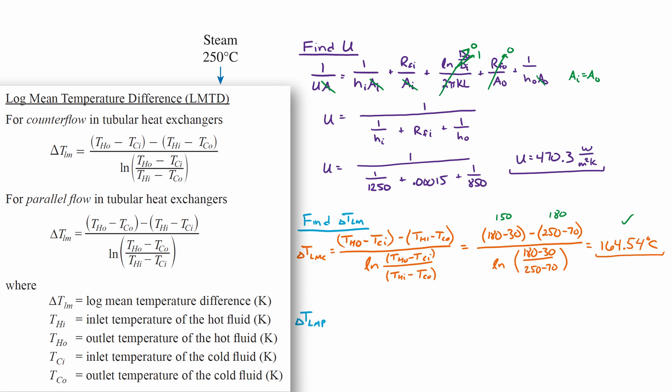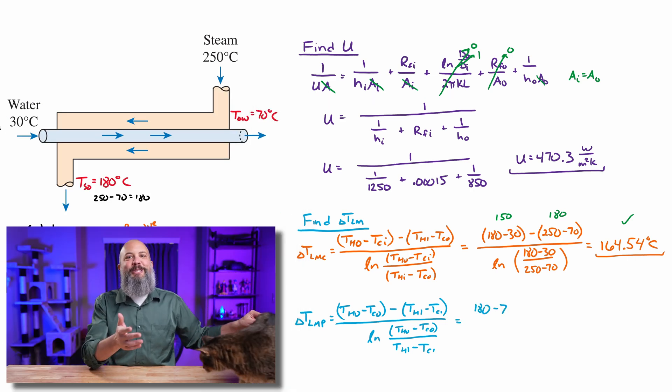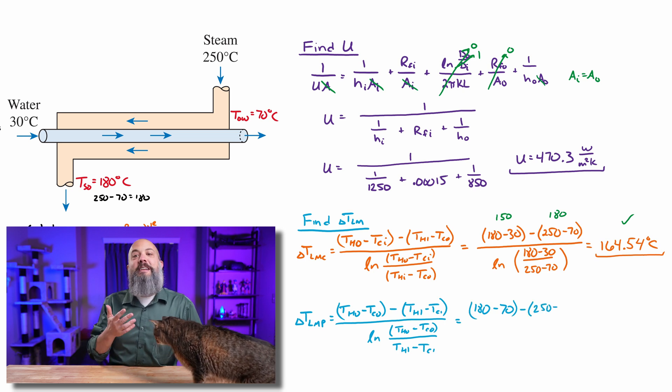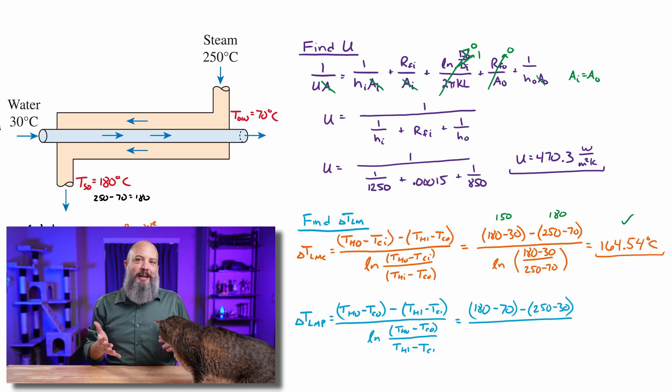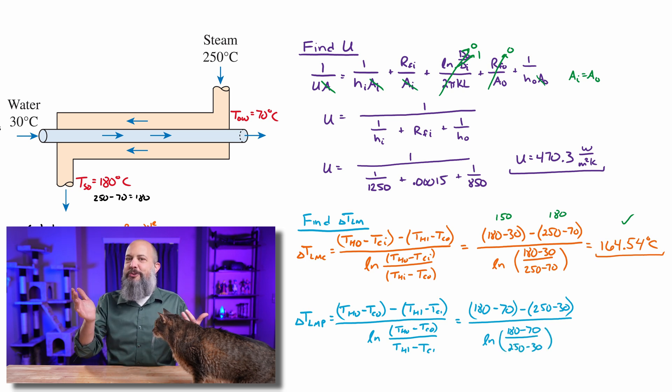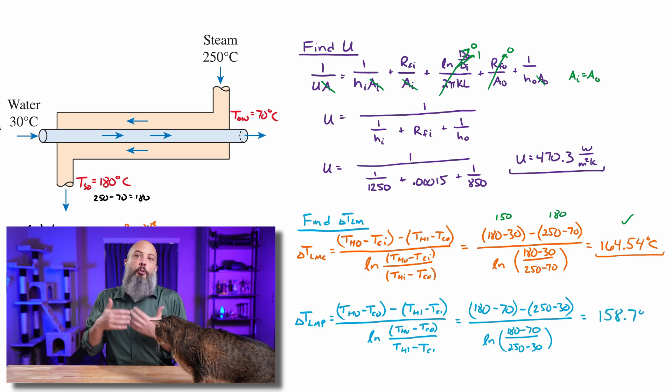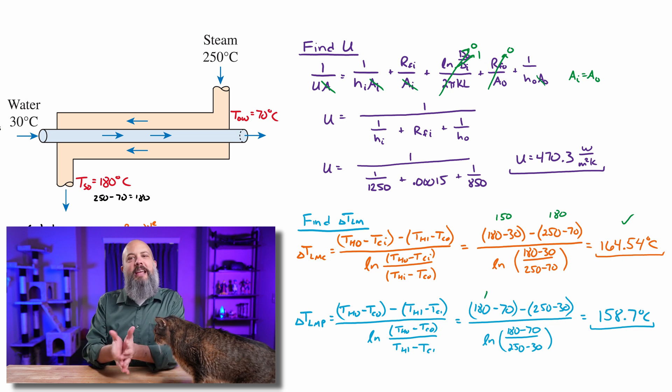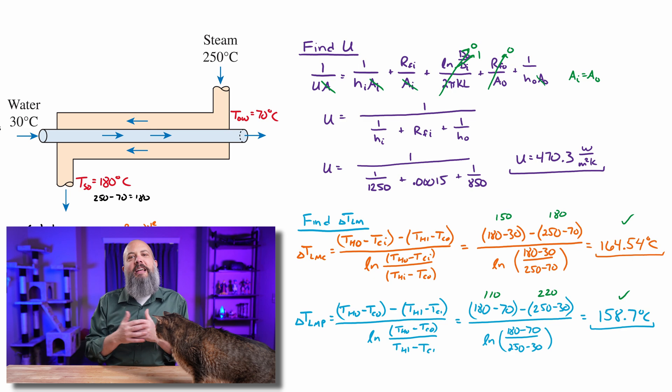Now, if this heat exchanger were actually parallel flow, then we would have the hot and cold inlets right next to each other and the hot and cold outlets right next to each other. So in the equation, we now see T_hot_out and T_cold_out next to each other, T_hot_in and T_cold_in next to each other. So 180 minus 70 is 110, 250 minus 30 is 220. So we've got a much bigger difference in between these. We get a delta T_LM of 158 degrees, which is in between the two. Exactly halfway would be 165, so 158 is close enough. This looks like we didn't make a huge mistake here.